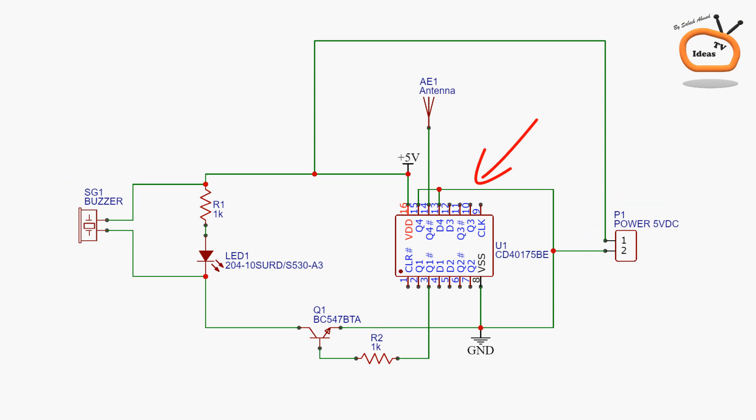When this sensitive IC, CD4017, detects the AC voltage through its antenna, it conveys a signal to the transistor. Or we can say that it gives a very small amount of current to the transistor's base in order to cancel out the barrier. As a result, the buzzer is activated.